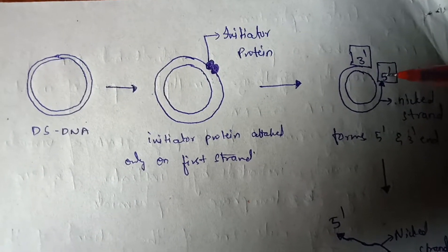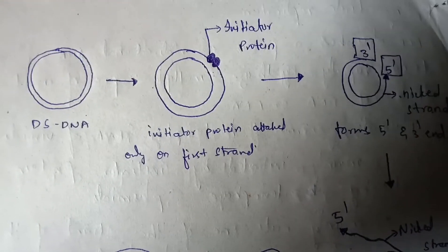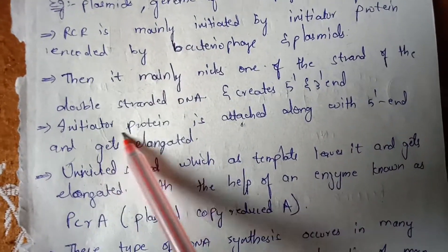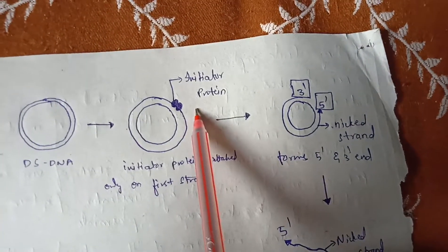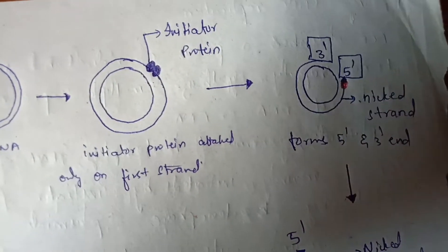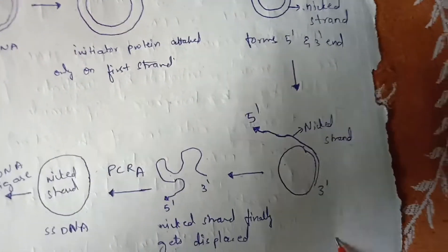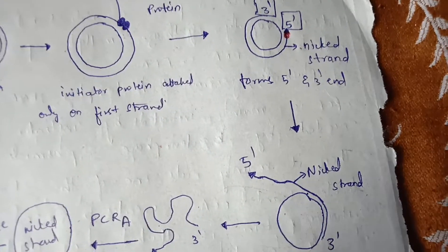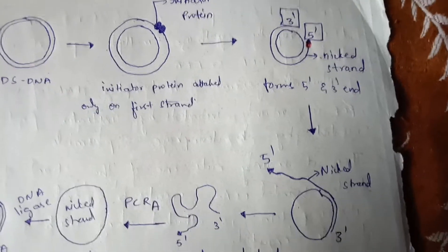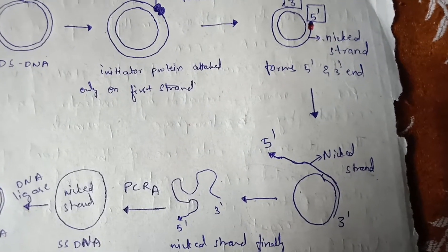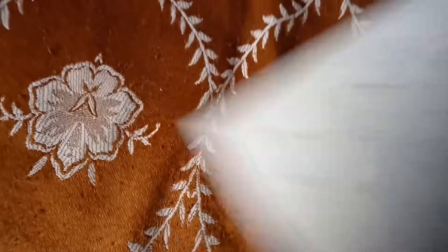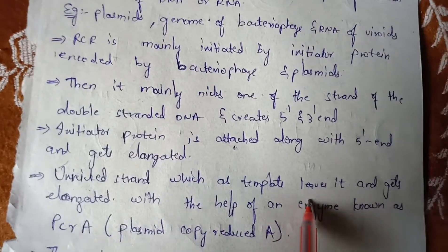Due to the separation of the first strand by the initiator protein, two ends are formed — a 5' end and a 3' end. This strand is named the nicked strand. The initiator protein attaches at the 5' end and gets elongated. The main function of the initiator protein is to pull out the first strand, causing elongation. The first strand gets pulled out and elongated.